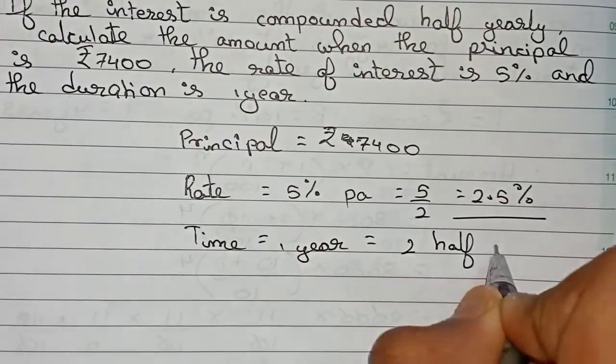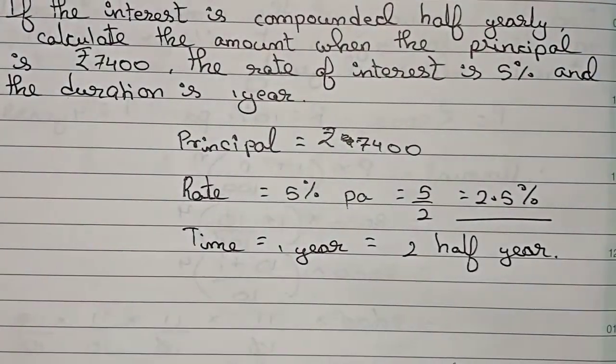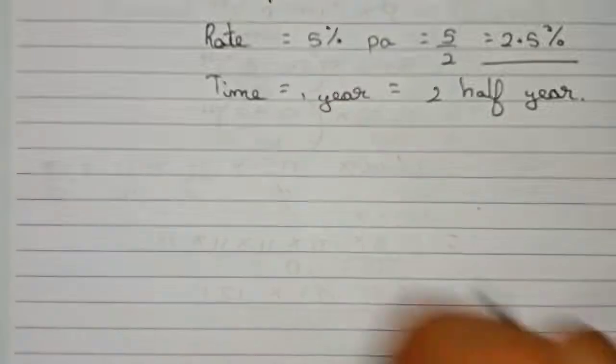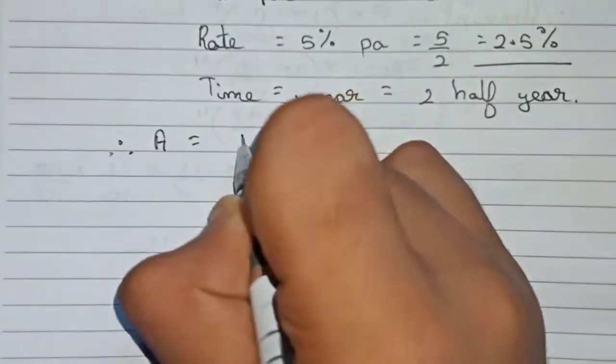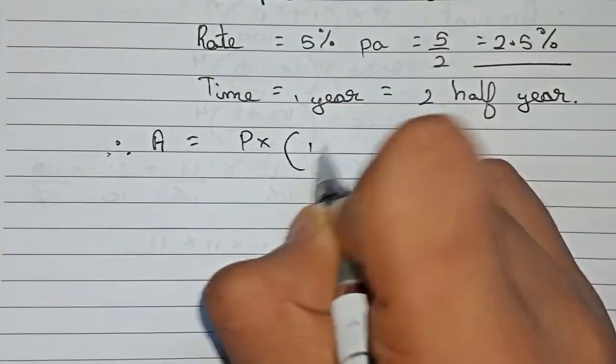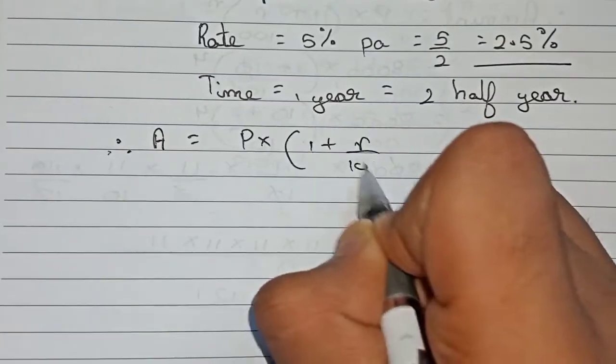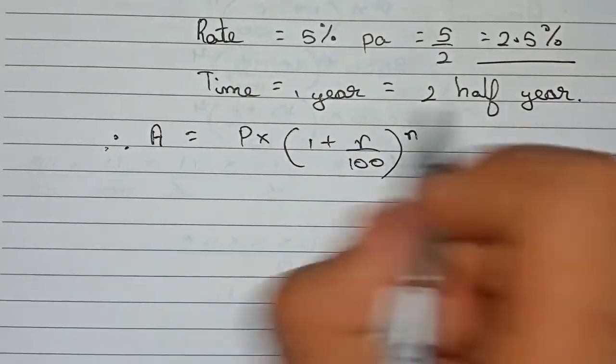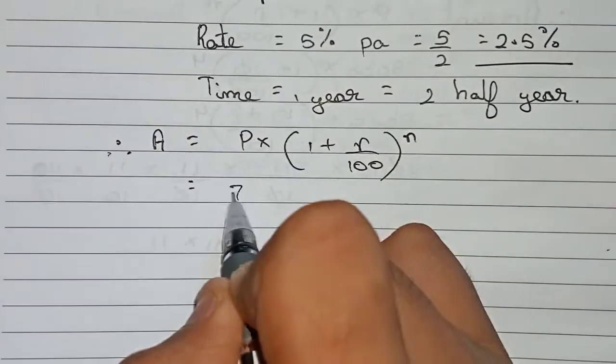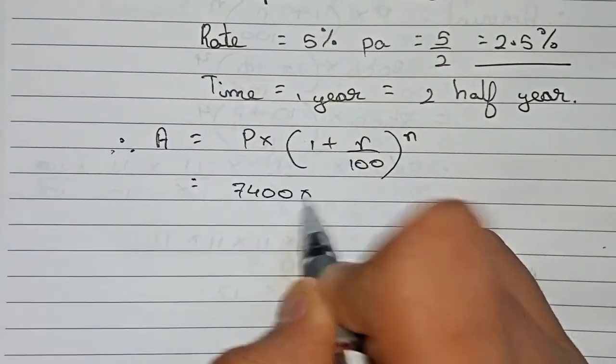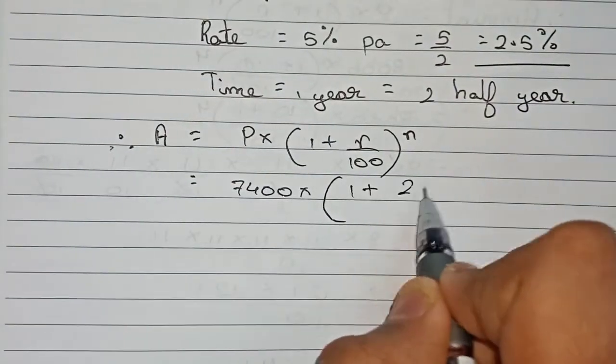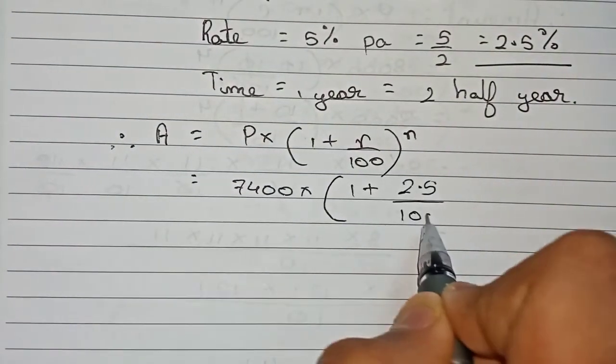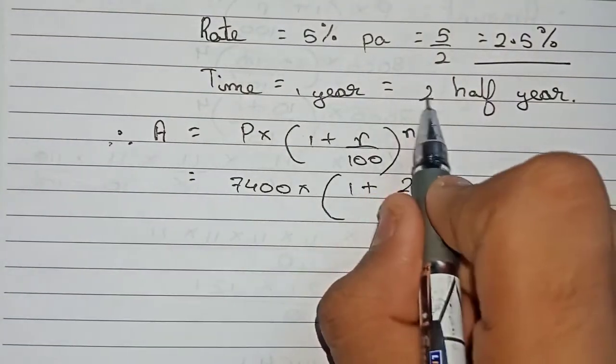Therefore, the amount equals: the formula is principal into bracket (1 + rate/100) to the power n, where n is the number of periods. Principal is 7400, into (1 + 2.5/100) to the power 2.